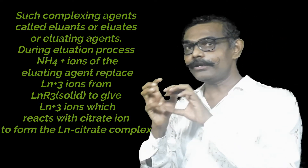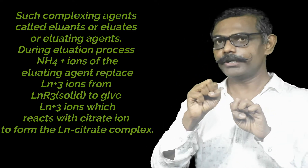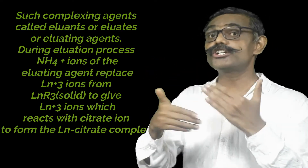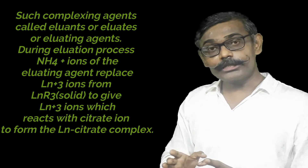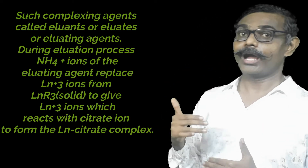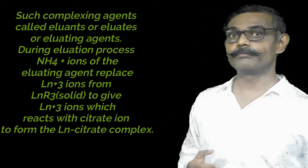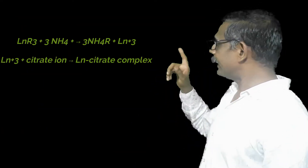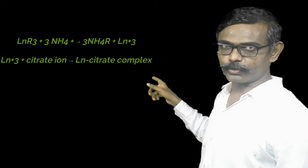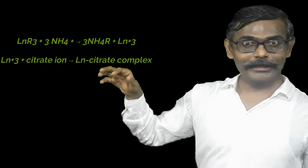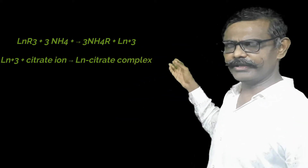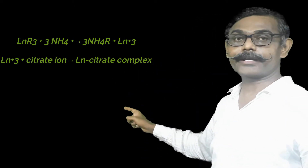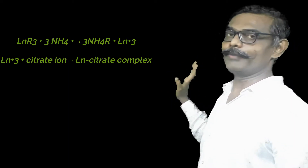This is not a one-step process because there is an equilibrium, and wherever there is equilibrium, if you disturb it, equilibrium will adjust so there is no net change. Using this property, lanthanides are removed. When ammonium citrate and citric acid are passed through, the reactions are: LnR₃(s) + 3NH₄⁺ → 3NH₄R + Ln³⁺(free), and then Ln³⁺ reacts with citrate ions to form a lanthanide citrate complex.